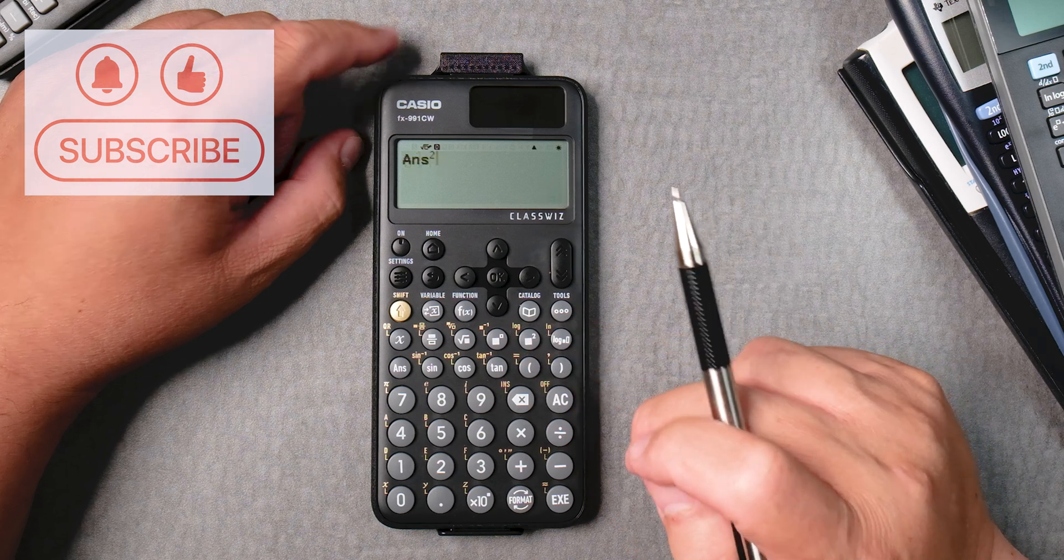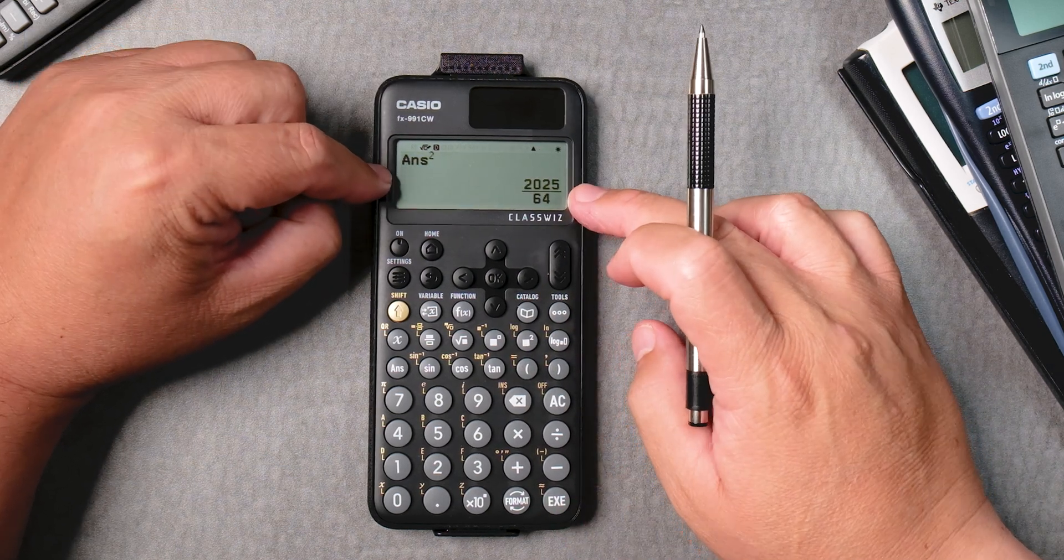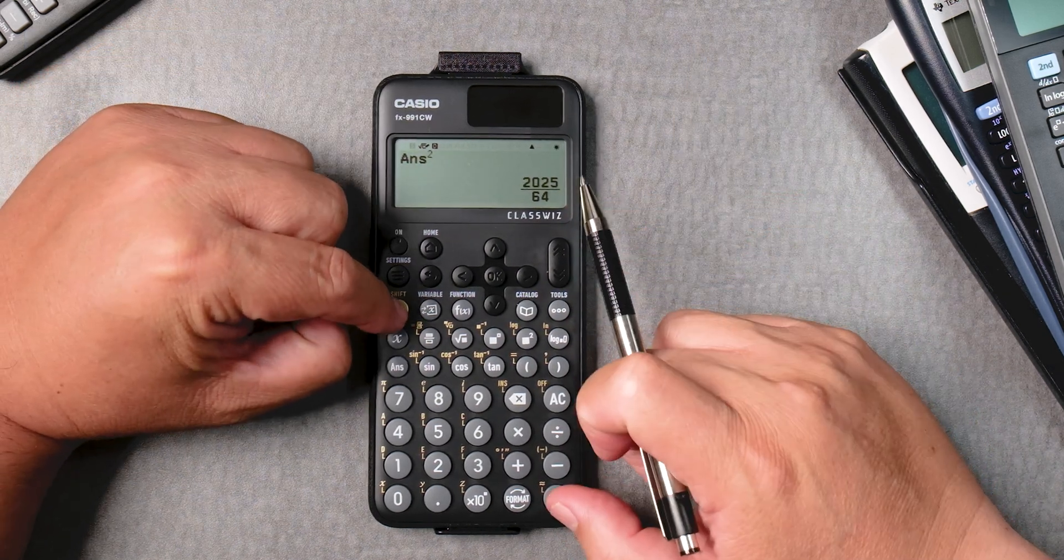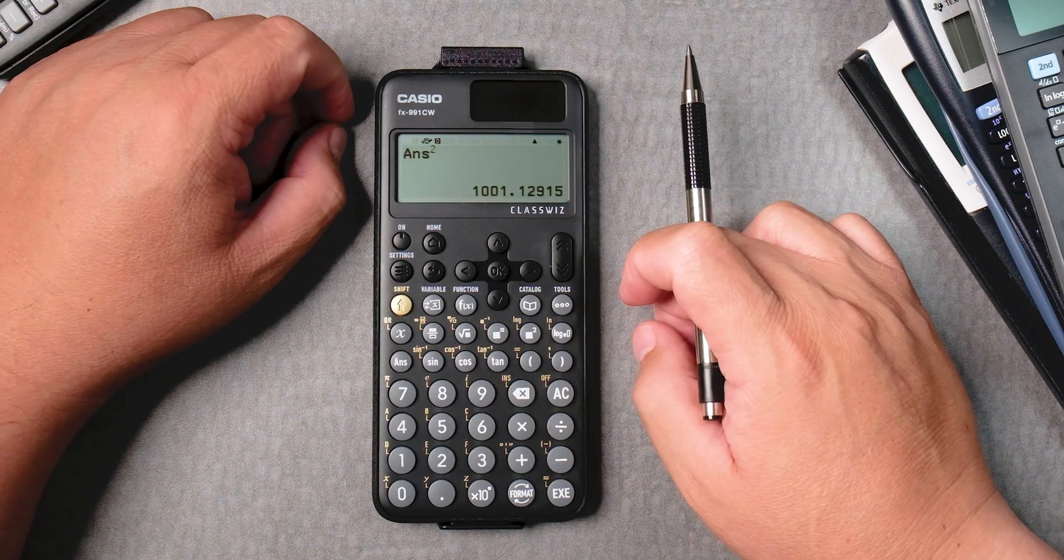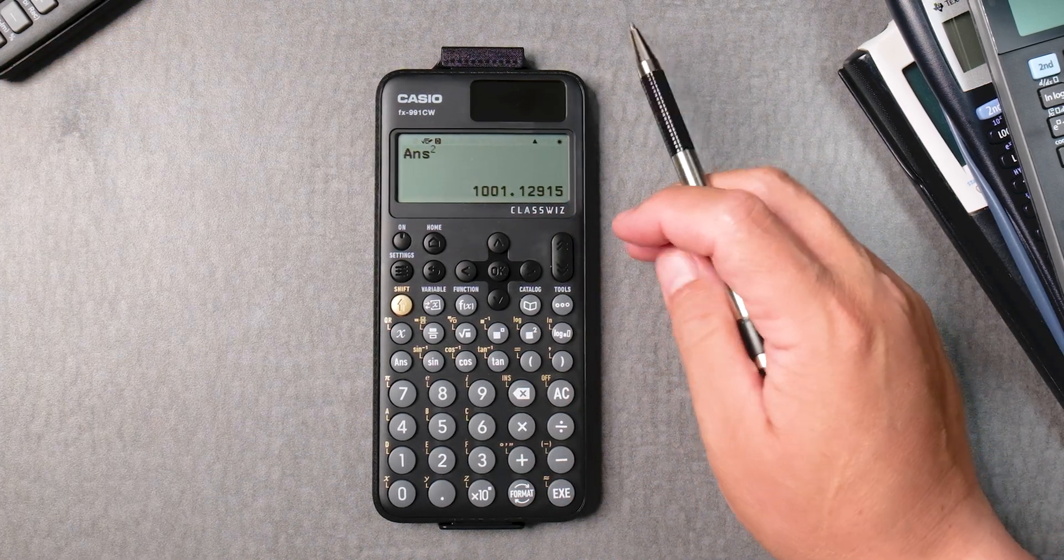Let's say you wanted to square the answer. It gives you in fraction form, and you can go shift exe and it gives you the decimal equivalent.